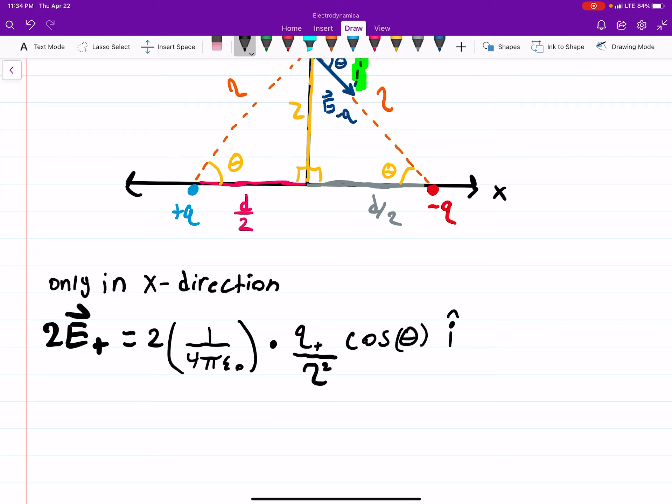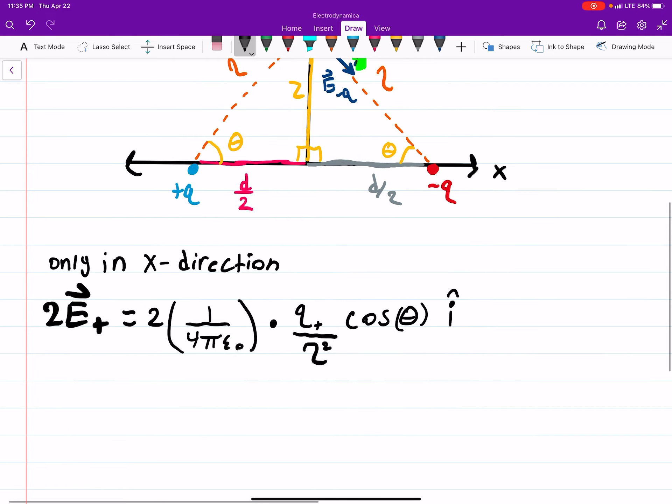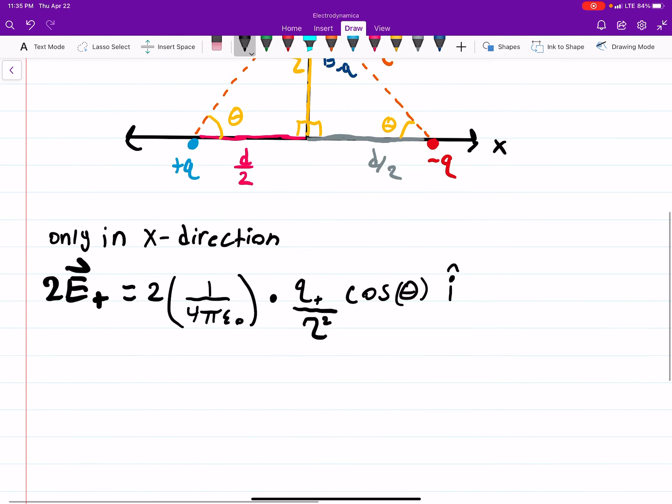So essentially what we're doing is we're taking the e field in the x direction from the positive charge and multiplying it by two to get the contribution from the negative charge. And we only want that because of the symmetry. We don't need to worry about the y. So if you're okay with that, then that's fantastic. All we really need to do now is find out what these are actually valued as.